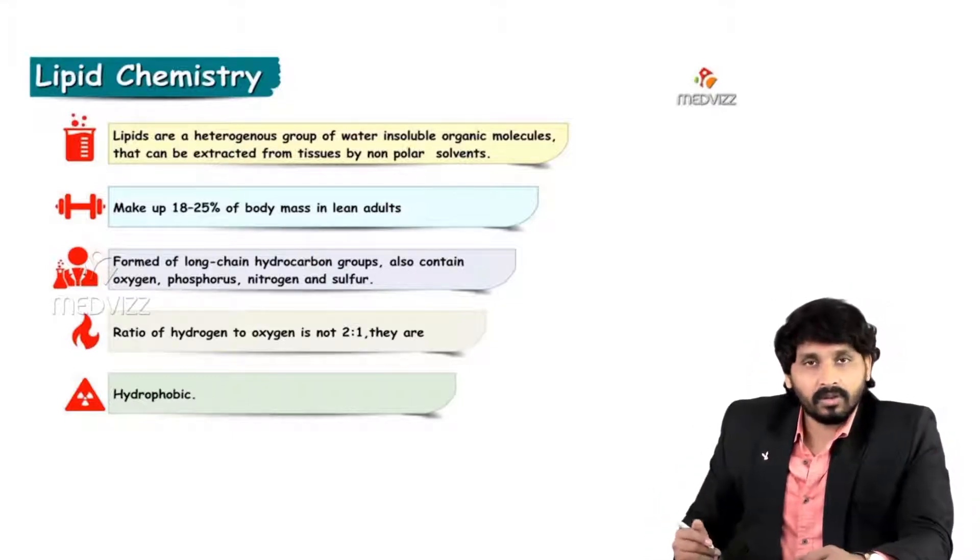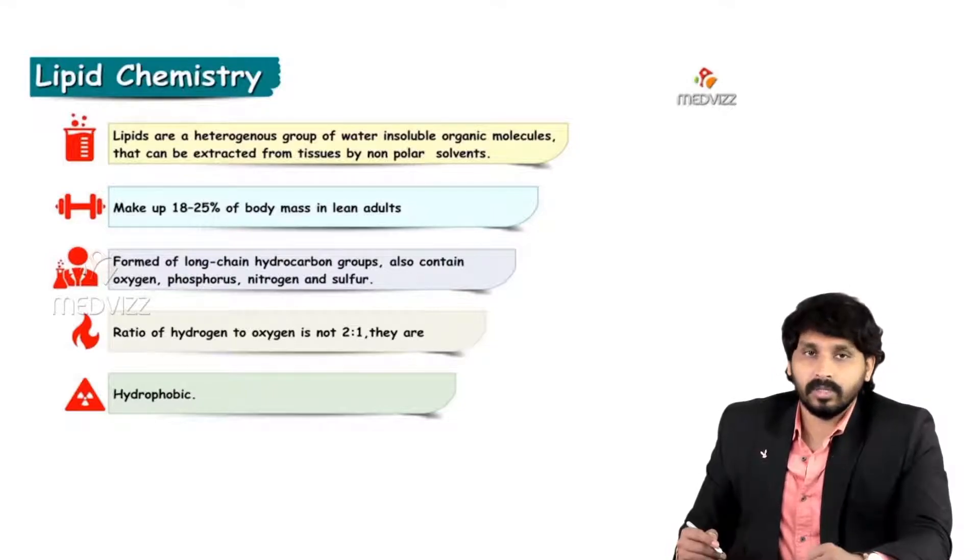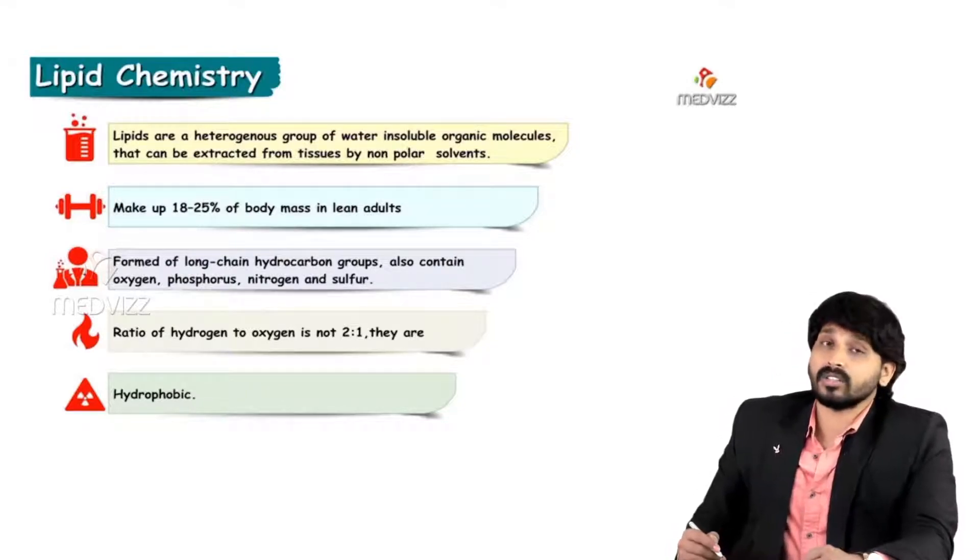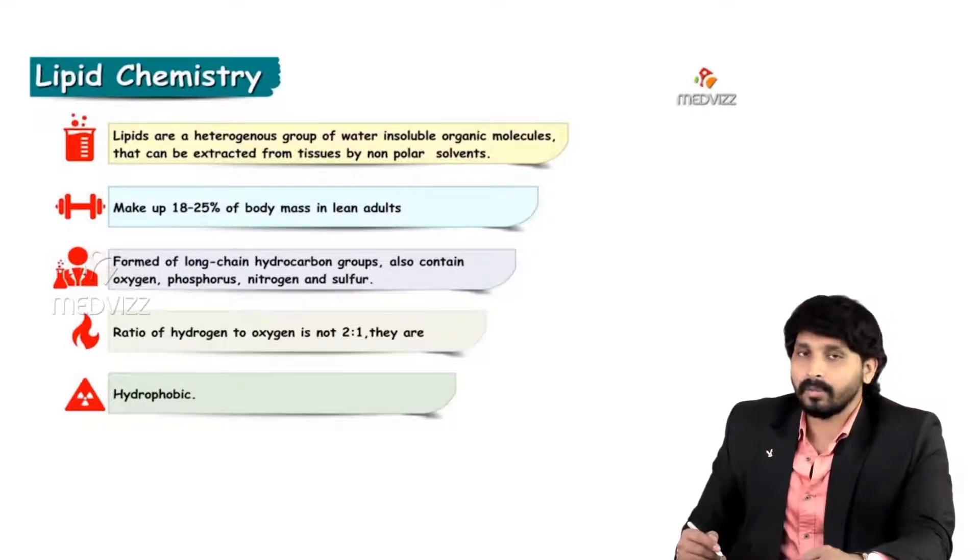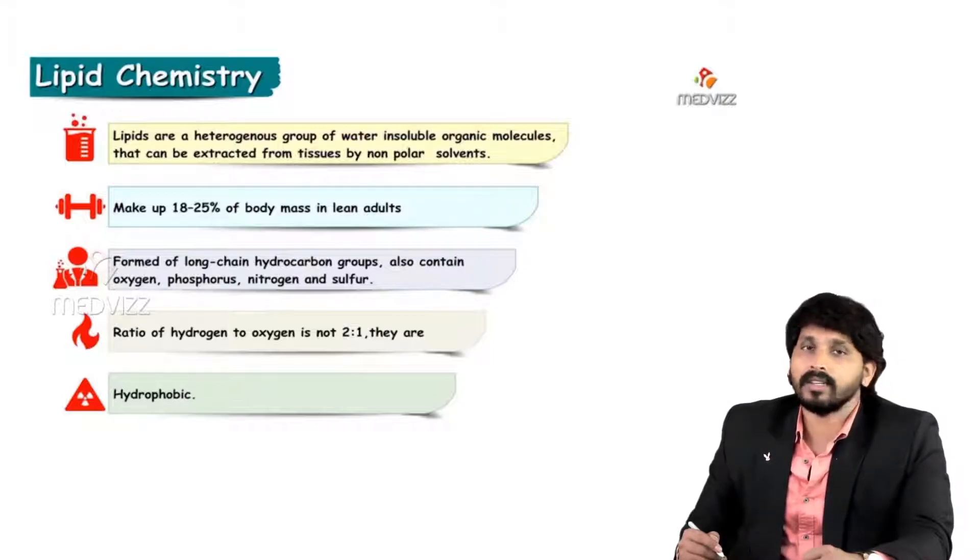Total percentage of lipids in our body can make up 18 to 25 percent and they are sources of long-chain hydrocarbon groups. They also contain, apart from carbon, oxygen, phosphorus, nitrogen, and sulfur.